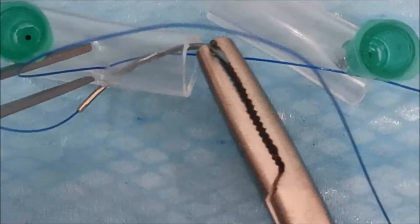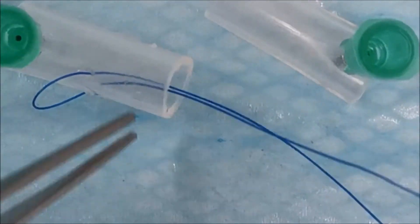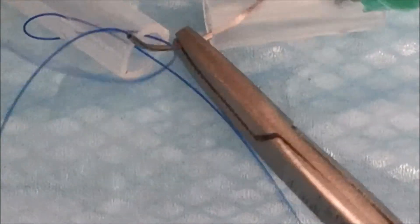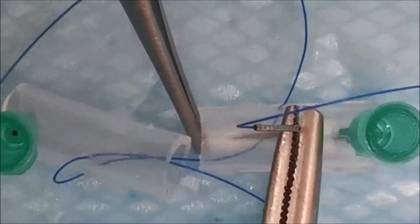It starts off the same but your second bite is an oblique bite going from the side of the tendon on one end on your side to the opposing side on the other tendon end.